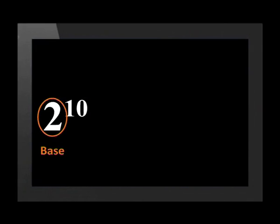Before we move on, let's quickly look at the parts of a power. In this example, 2 to the power of 10 is called a power. The 2 and the 10 also have names: 2 is called the base and 10 is the exponent. It's important to know this terminology so that we can better explain the laws of exponents. Remember that whenever the word 'power' is used, it implies we are talking about a number that has a base and an exponent.